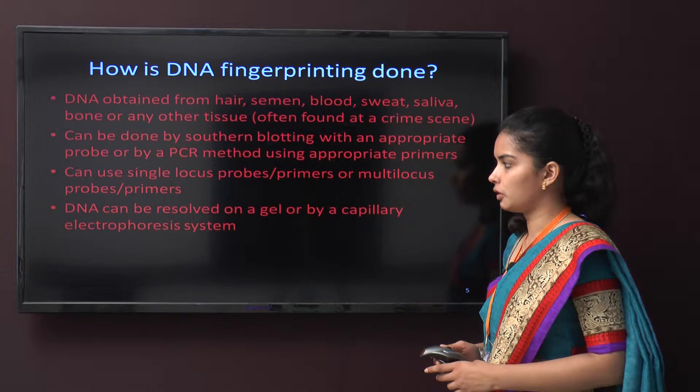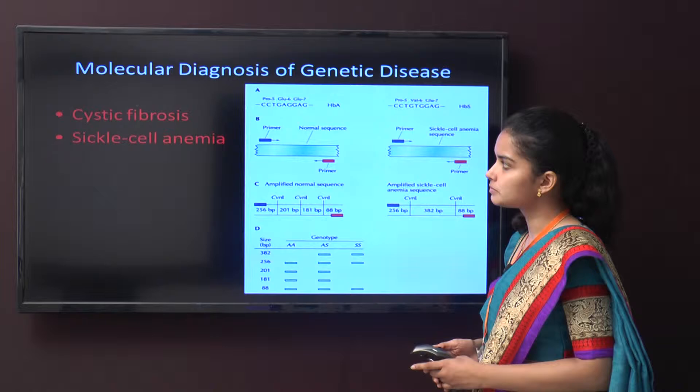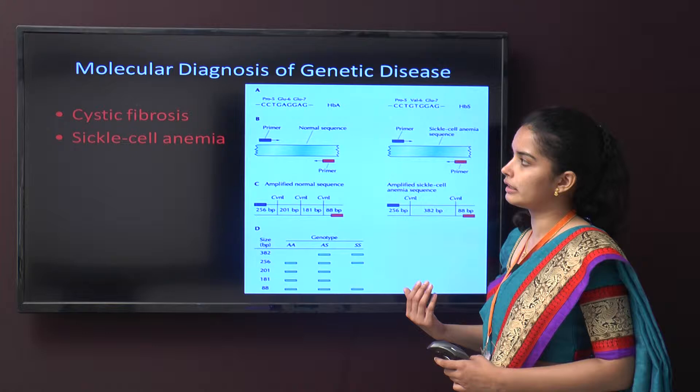This figure shows how DNA fingerprinting is done. Molecular diagnosis of genetic diseases can also be done by fingerprinting — for example, cystic fibrosis and sickle cell anemia can be detected this way.